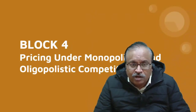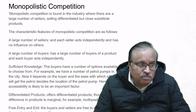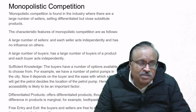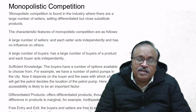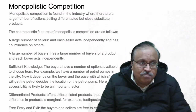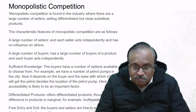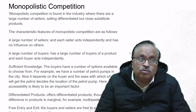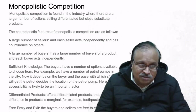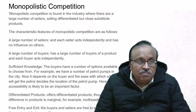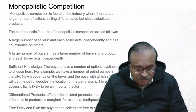Moving on to pricing under monopolistic and oligopolistic competition. Monopolistic competition is found in industries where there are a large number of sellers selling differentiated but close substitute products. We should not confuse this with monopoly—in monopoly there is one seller, but in monopolistic competition there are a large number of sellers.